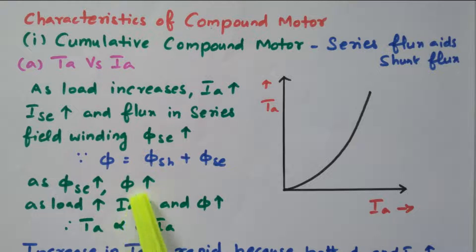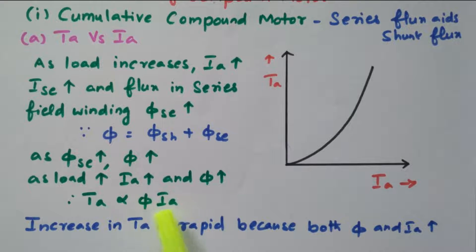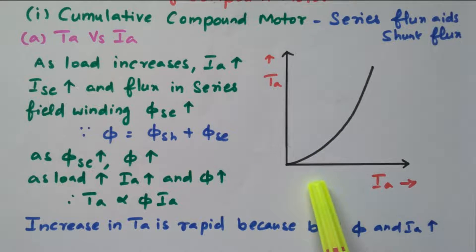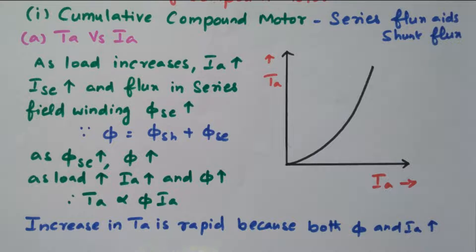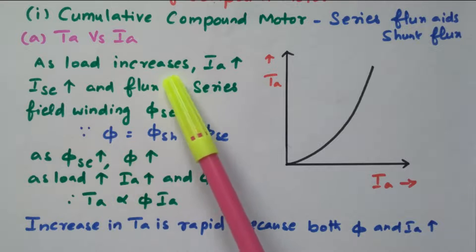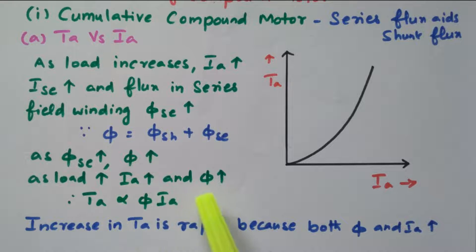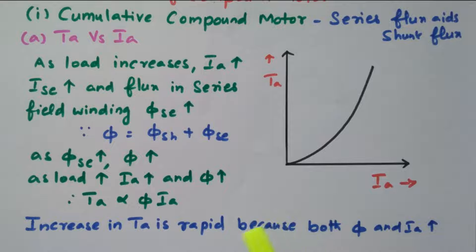As the load increases, armature current increases and the total flux also increases. We know that Ta is directly proportional to φ × Ia. Here both φ and Ia are increasing, so we get the graph in a parabolic manner. The increase in Ta is rapid because both φ and Ia are increasing together.